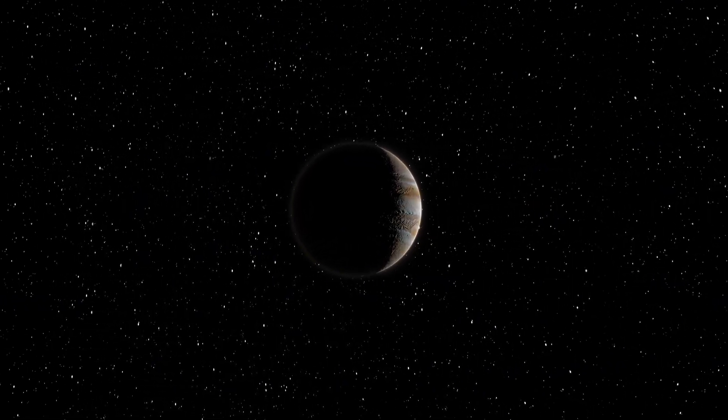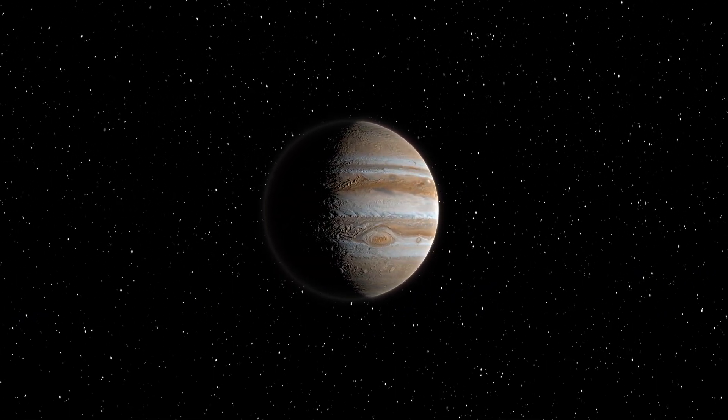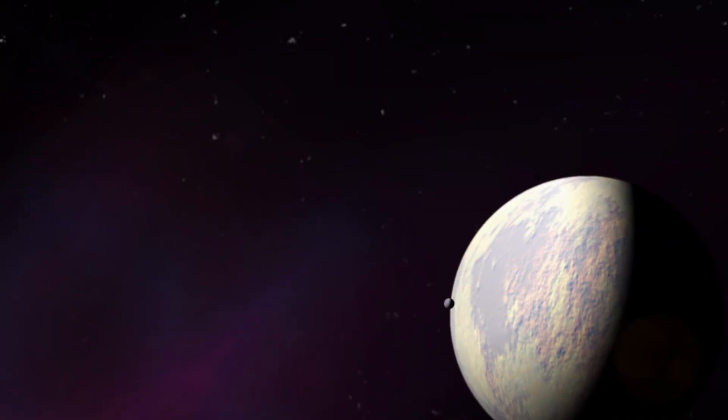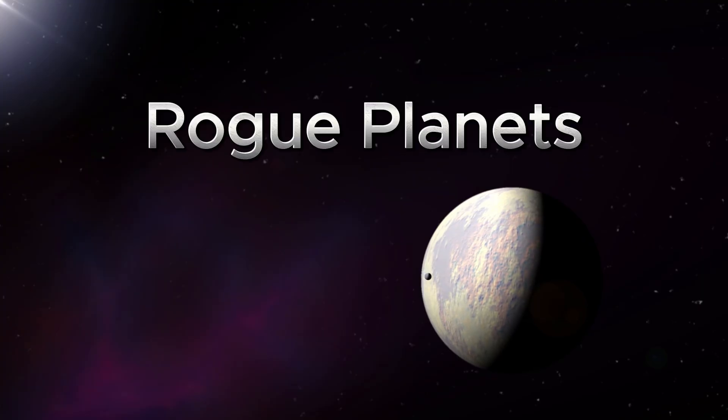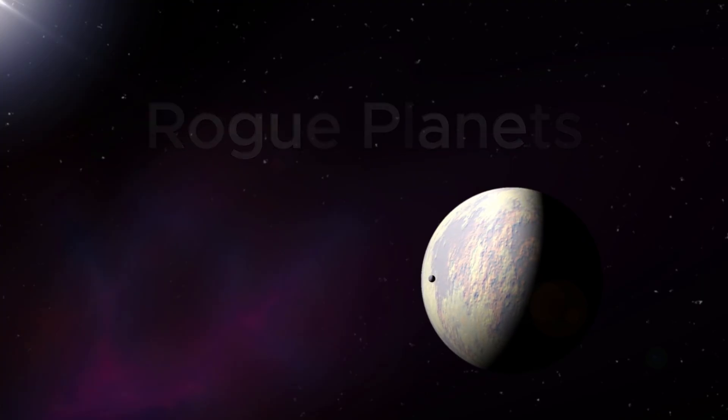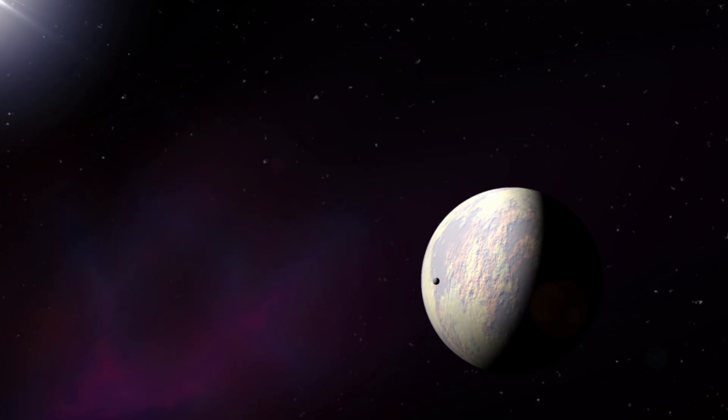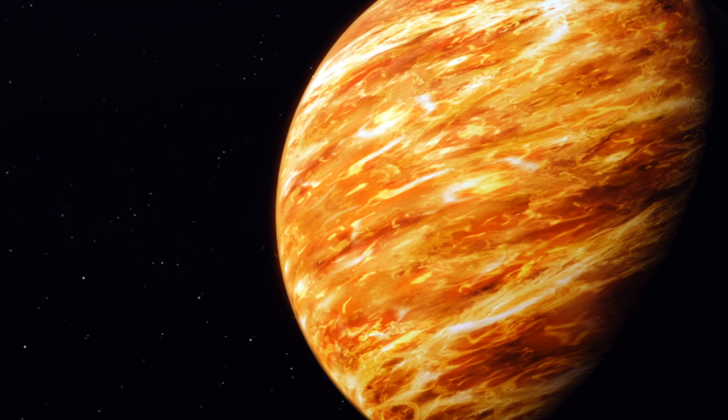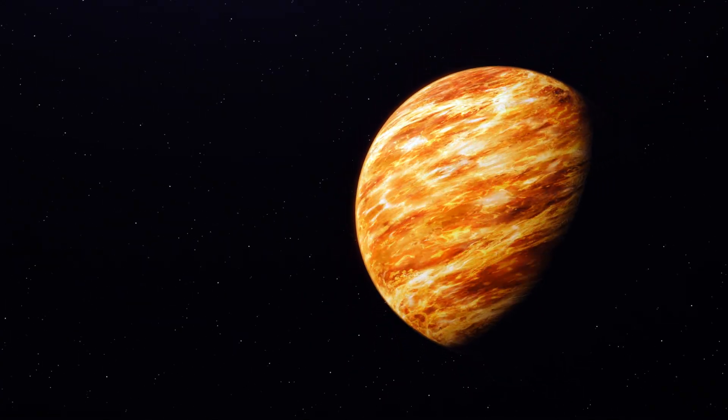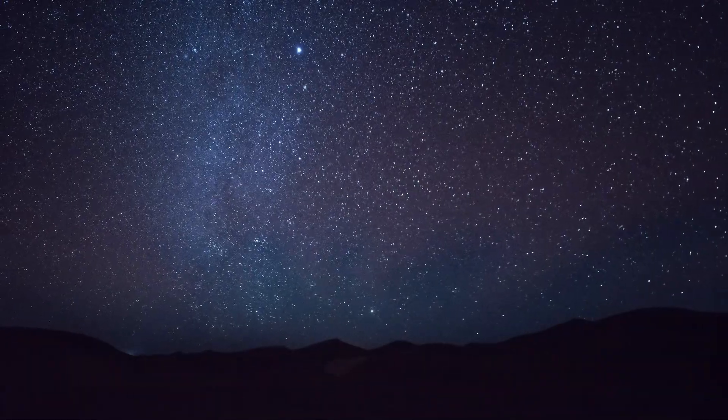Now, imagine a planet the size of Jupiter, but with no star, no sunlight, just drifting through the cold darkness. These are rogue planets, worlds that were flung out of their home systems, doomed to wander forever. Some may be smaller than Earth, others bigger than gas giants. Astronomers believe they could outnumber the stars in our galaxy.